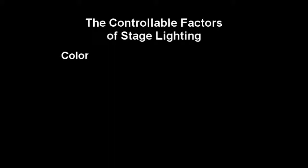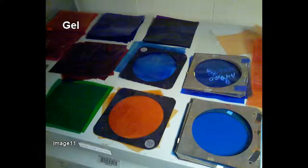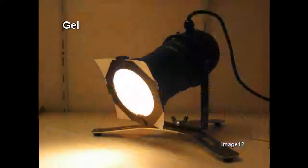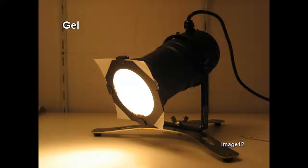Another important controllable factor of light is color. Pure white light contains all of the colors of the rainbow. In order to control the colors in white light, we need to be able to filter out the colors we don't want. The device most commonly used to do this is referred to as a gel — short for the technical term gelatin, which refers to the technique used to create gels. It is a thin, flexible sheet which can be placed in a frame, which is then placed in a frame holder and directly put in front of a light beam in a lighting instrument. The gel filters out all of the colors of the white light with the exception of the color of the gel itself.